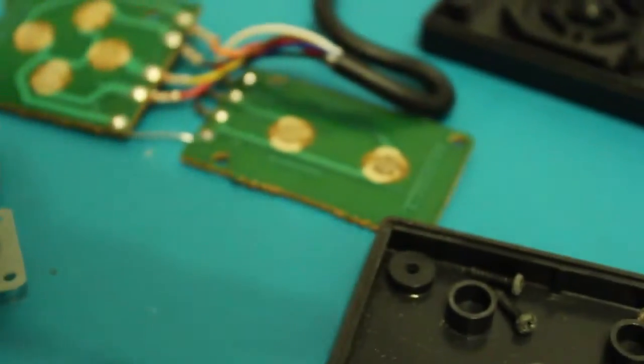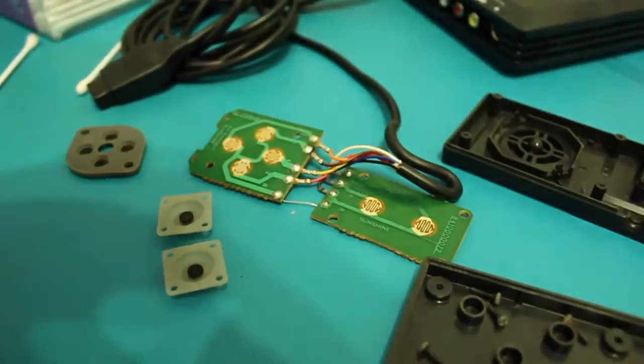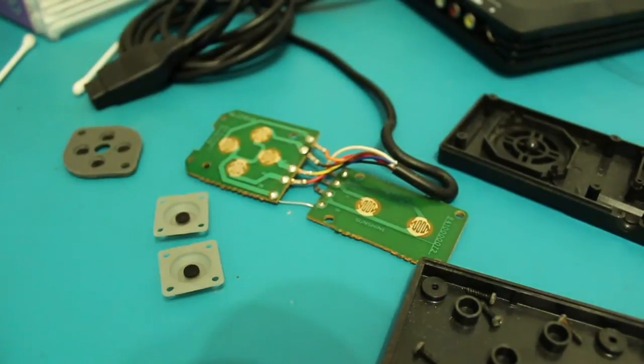Worst controller to take apart so far though. It's not too bad. I mean, you've got to desolder the rumble feature on the PlayStation 3s to completely disassemble it. But I think Saturn model 1 controllers, the triggers. Absolute pain. Yeah, they don't like sitting in properly.